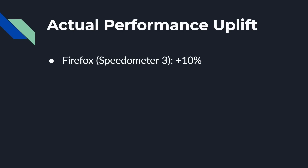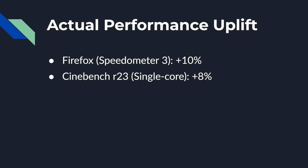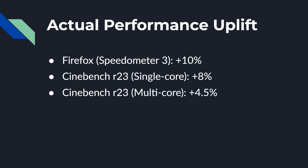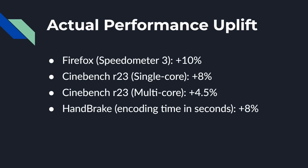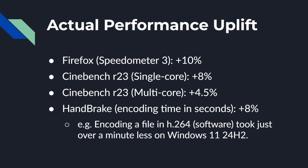Running Speedometer 3 on the x86-64 version of Firefox being emulated, it was 10% faster on the new version of Windows 11. For Cinebench R23, there was an 8% increase in single-core performance and a 4.5% increase in multi-core performance. For Handbrake, it was an 8% improvement overall — encoding a file in H.264 using software encoding took just over a minute less. So we're seeing real-world improvements in x86-64 emulation even on older hardware like the Surface Pro X, and with the new Snapdragon X Elite or X Plus, we'll see combined software and hardware improvements.